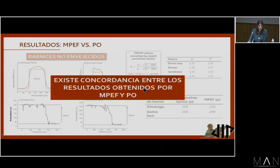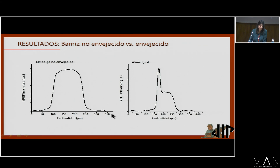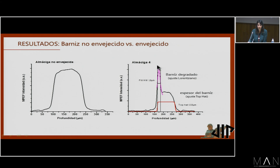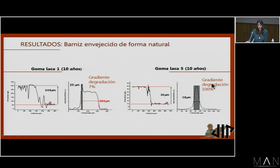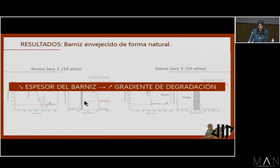Existe concordancia entre los resultados obtenidos en ambas técnicas. También comparamos los perfiles entre el barniz no envejecido y el barniz envejecido: claramente se puede ver que existe una diferencia en esta región. Pudimos observar que la zona de barniz degradado presentaba un pico de mayor fluorescencia, y en este caso se realizó un ajuste mediante una lorentziana. Pasando a las muestras de estudio, comparamos las muestras de barniz envejecido naturalmente. Vimos que existía una correlación entre los valores obtenidos por la perfilometría óptica y la fluorescencia por excitación multifotónica, y determinamos el gradiente de degradación, es decir, qué porcentaje de la muestra estaba oxidada o degradada en relación a la muestra total. Vimos que aquella muestra con mayor espesor presentaba un gradiente de degradación considerablemente más bajo. Por lo tanto, a menor espesor de barniz, mayor gradiente de degradación.